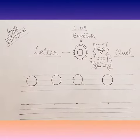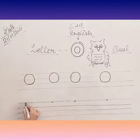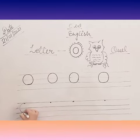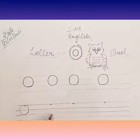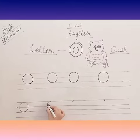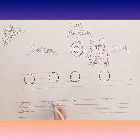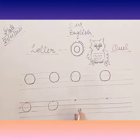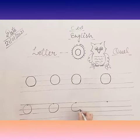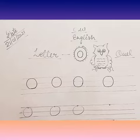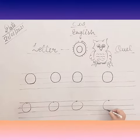Now we will write the letter O with a dot. Start with the first one — start from the dot and make a circle. Once again, start from the dot and make a circle. Once again, start from the dot and make a circle.